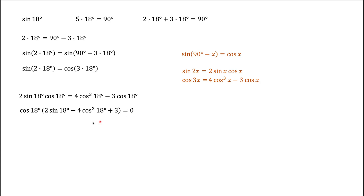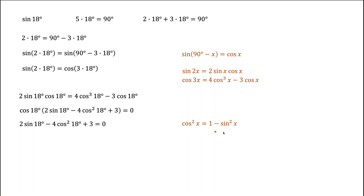This means either cosine of 18 degrees equals zero, or the expression in parentheses equals zero. But we know cosine of 18 degrees is a positive number, so whatever is in parentheses must equal zero. The parenthesis contains sine of 18 degrees and cosine squared of 18 degrees. We can convert cosine squared of 18 degrees using the Pythagorean identity into sine squared of 18 degrees.